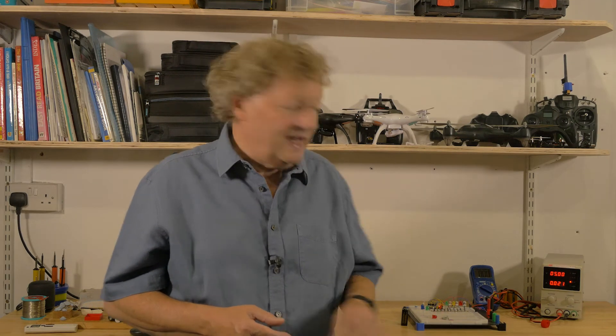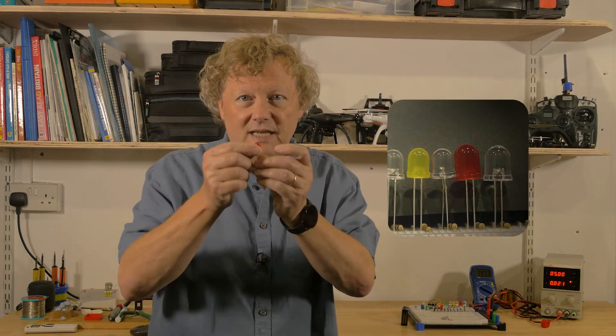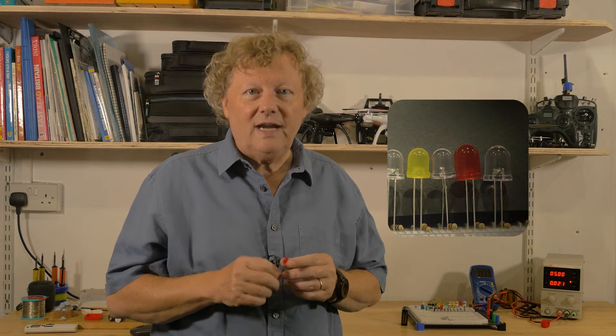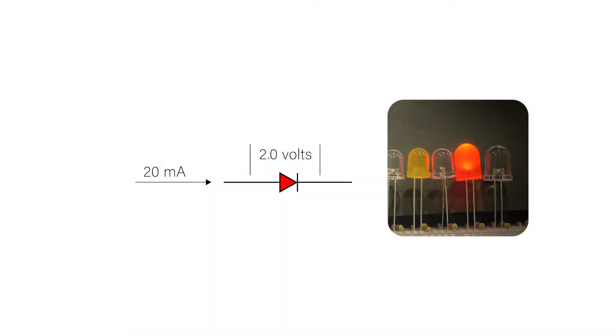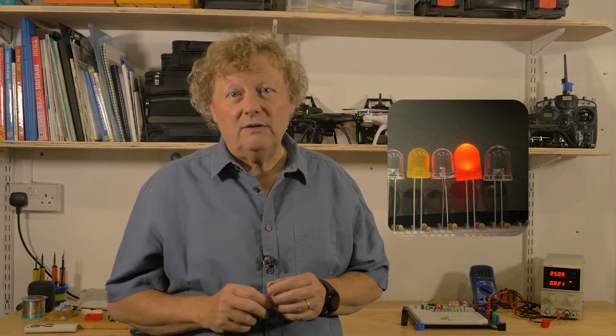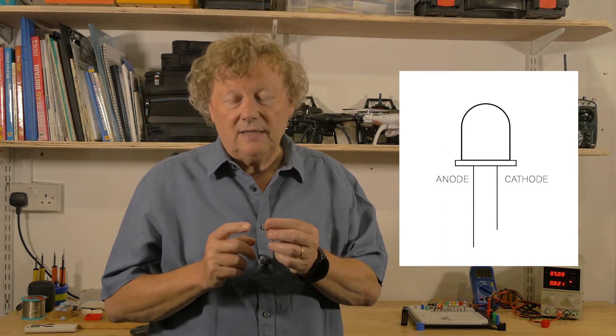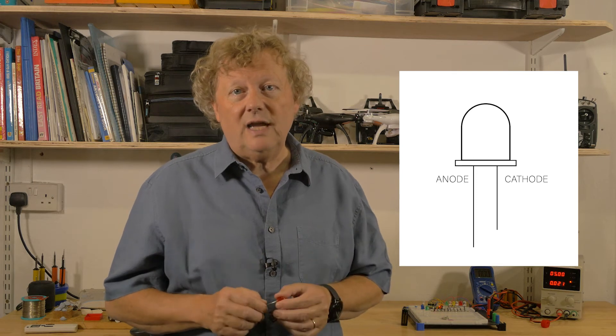If they haven't, there are some common values you can start with to make sure you don't overload them. Here's a red 10 millimeter diffused colored LED from our stock. The recommendation is between 1.8 and 2.2 volts across the LED and 20 milliamps through the LED — that's 20 thousandths of an amp, a very small current. The long wire is the positive side or anode, and the short wire is the negative side or cathode.